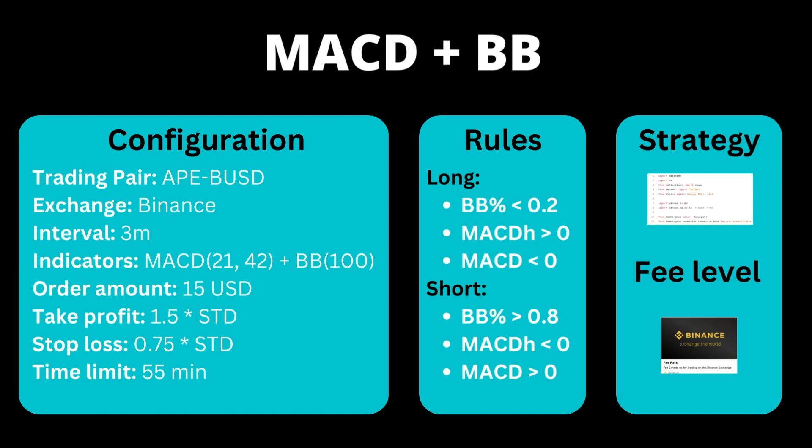Later when we look at the graph you'll understand why we use dynamic values. The time limit is 55 minutes. This can also be variable based on the standard deviation or opportunity available, but for now let's stick with 55 minutes.